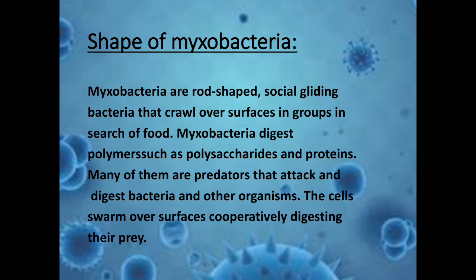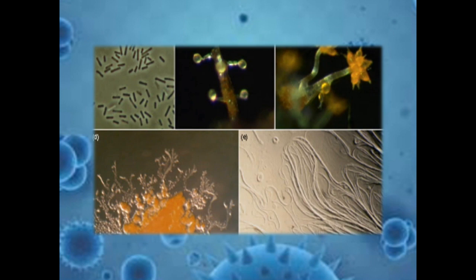Myxobacteria digest polymers such as polysaccharides and proteins. Many of them are predators that attack and digest bacteria and other organisms. The cells swarm over surfaces cooperatively, digesting their prey. You can observe here how they crawl or glide in the soil or on the surface of any substrate.